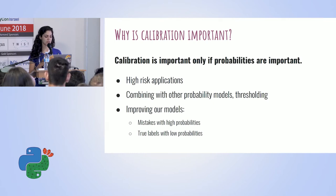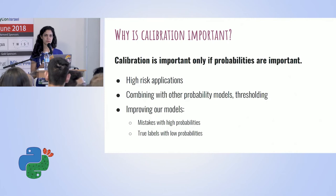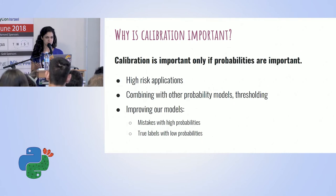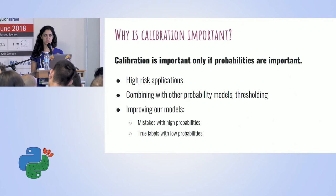Another example is combining a model with other probability models, or doing threshold-based decisions. For instance, if we want to send patients to a very expensive exam, and the insurance company says only patients with above 80% probability of suffering from this condition should receive the exam — in that case we really care about the probability being accurate, because our threshold is directly based on that probability.